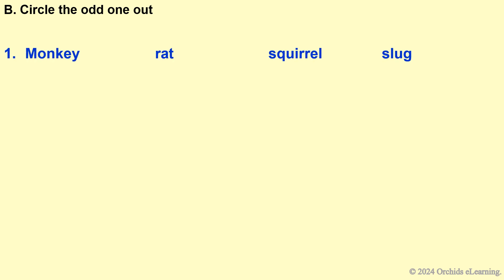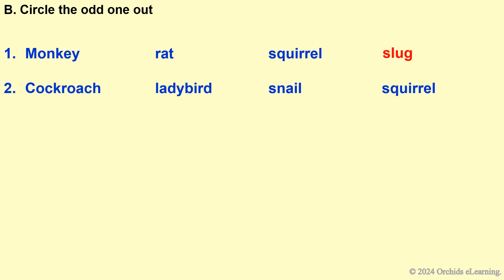Circle the odd one out. Monkey, rat, squirrel — odd one out: slug. Cockroach, ladybird, snail — odd one out: squirrel.